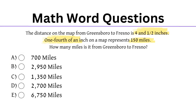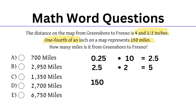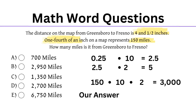To find the exact answer, we would see how many 0.25s fit into 4.5 and then multiply by 150. But instead, we will estimate. 0.25 multiplied by 10 equals 2.5, and 2.5 multiplied by 2 equals 5, which is a little over 4.5. So we take 150, multiply it by 10 and then by 2, and we get 3000. So our answer is a little under 3000.